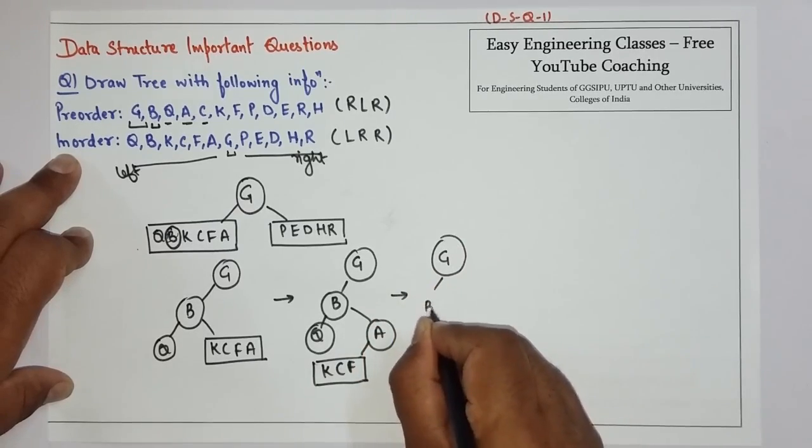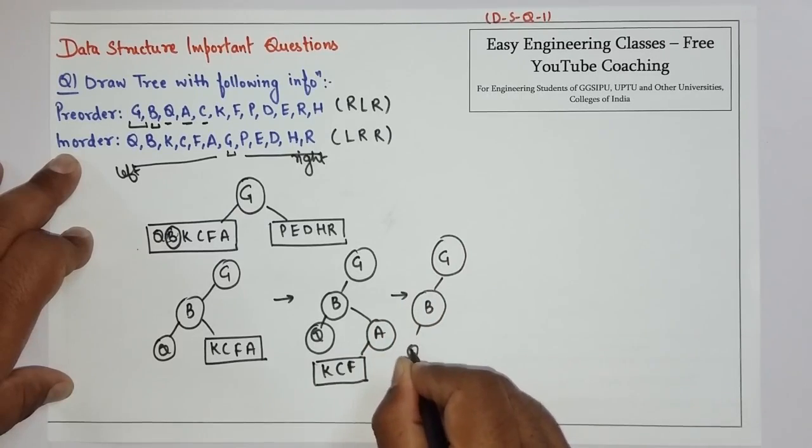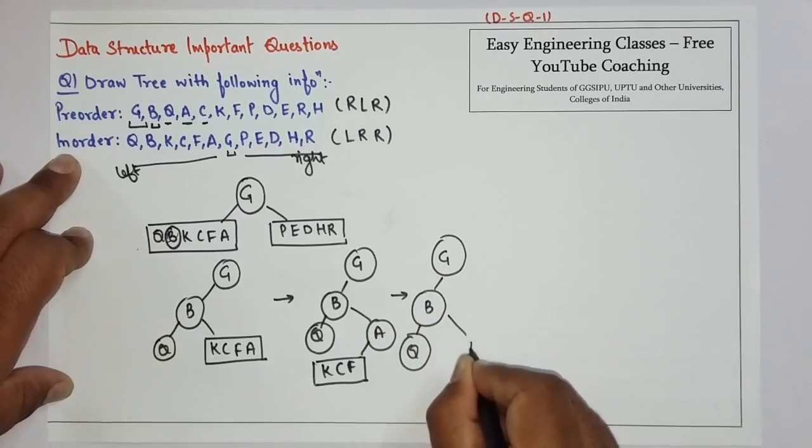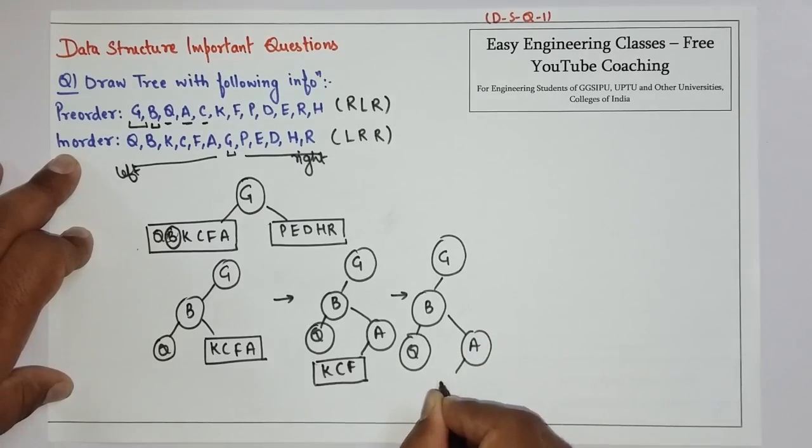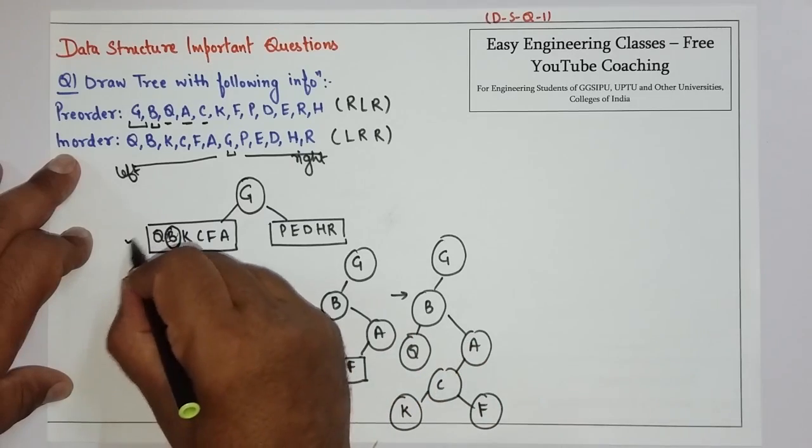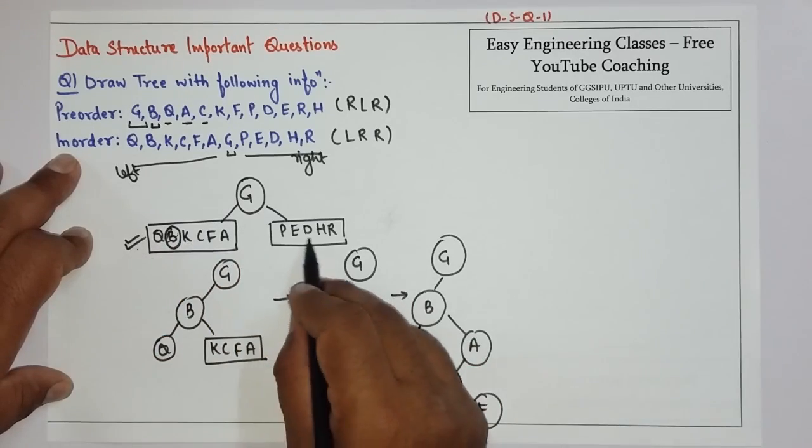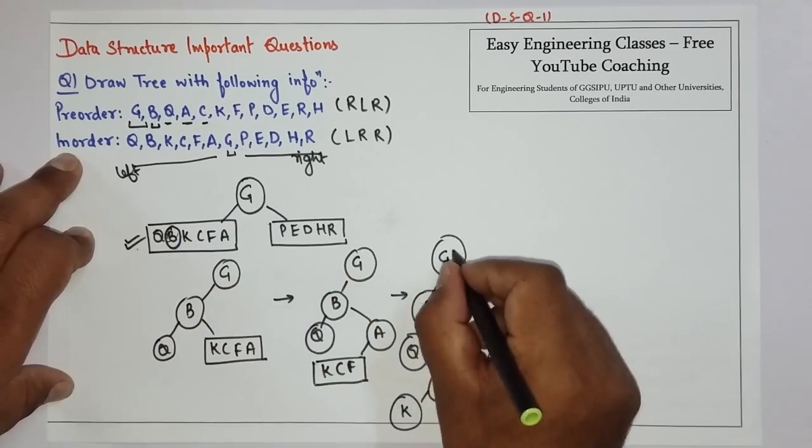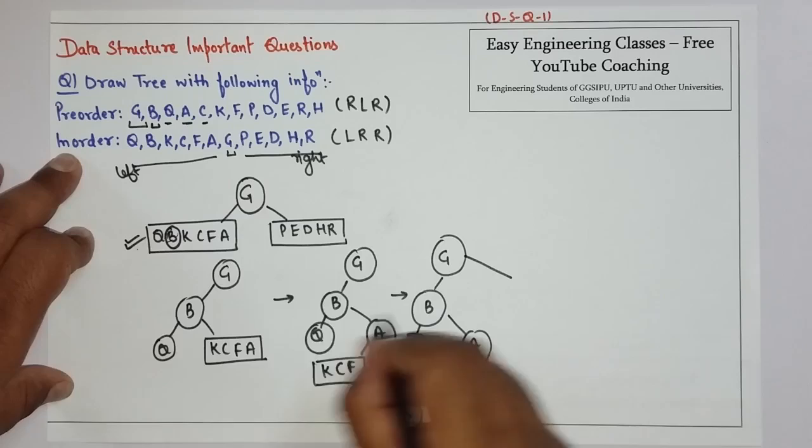G, B, Q, A, C, K, and F. So we have solved this particular left part. Now we have to solve for this right part.